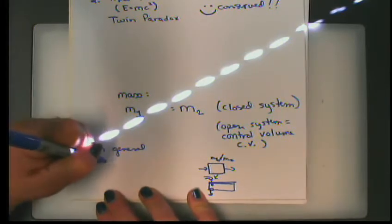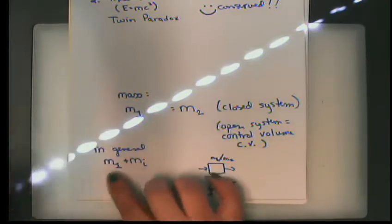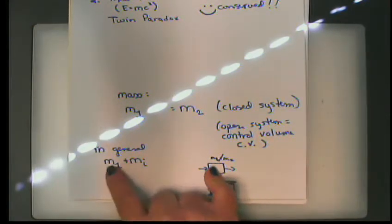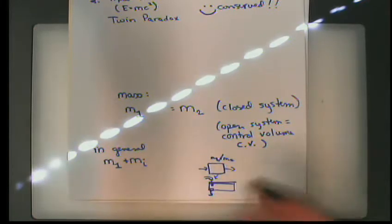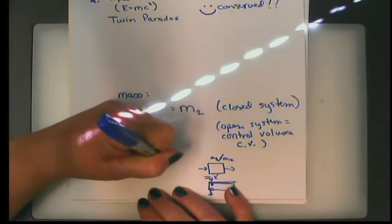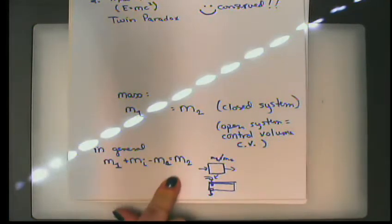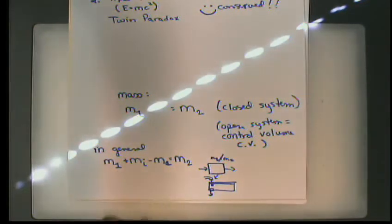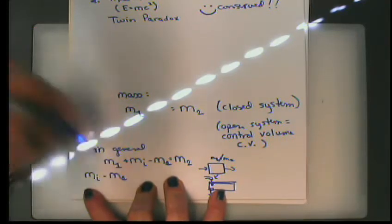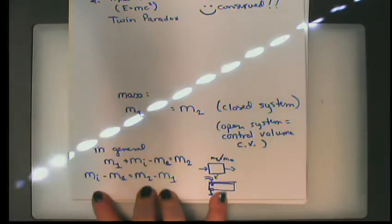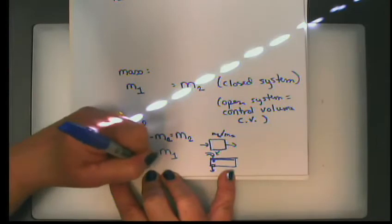In general, if we take the mass in a control volume at time 1 and add the mass that comes in — where M sub 1 means the mass in the control volume at time 1, and M sub i is the mass in during some fixed amount of time — minus the mass that exits, that equals the mass in the control volume at time 2. Note that subscript 1 and subscript i do not refer to the same thing. Rearranging: mass in minus mass exiting equals delta mass in the control volume.